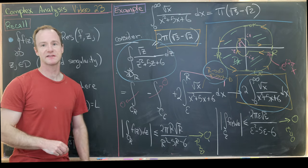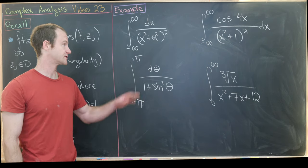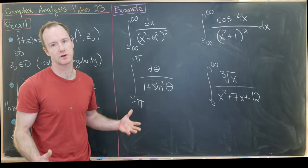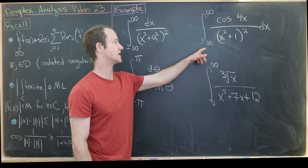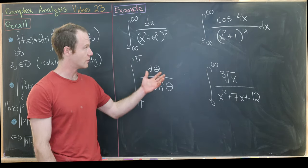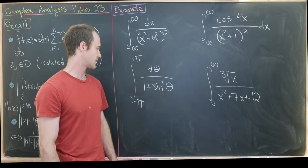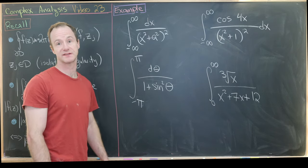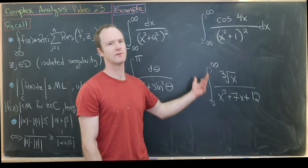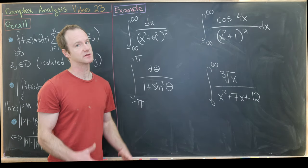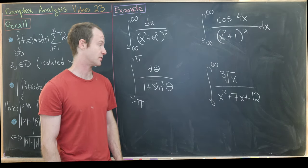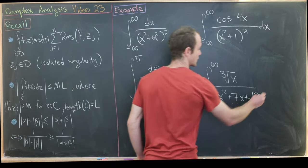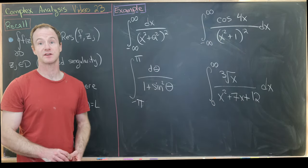Here are four warm-up problems. First: the integral from −∞ to ∞ of dx over (x² + a²)². Second: the integral from −∞ to ∞ of cos(4x) over (x² + 1)². Third: the integral from −π to π of dθ over (1 + sin²θ). And finally: the integral from 0 to ∞ of the cube root of x over (x² + 7x + 12) — be careful about the phase factor, which will be a little different than in the previous example.